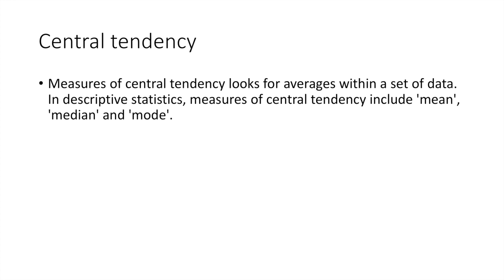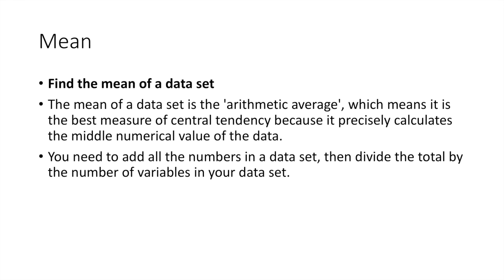The main thing we're going to look at is central tendency. That sounds complicated but it's not. Measures of central tendency look for averages within a set of data. In descriptive statistics, measures of central tendency include the mean, median, and mode. The mean of a data set is the arithmetic average — it is the best measure of central tendency because it precisely calculates the middle numerical value of the data.